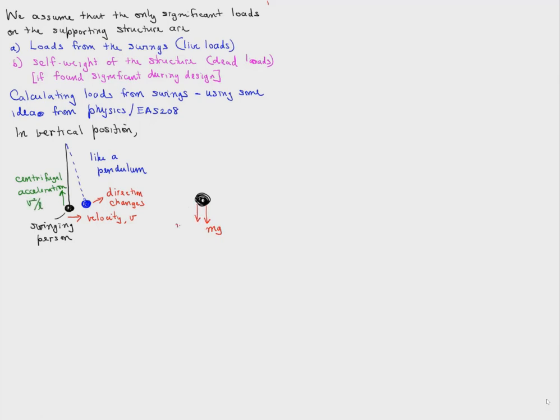So if we draw a free body diagram of the swinging person, there is the weight and the force associated with the centrifugal acceleration, mv squared over L. And so the tension in the swing is mg plus mv squared over L.